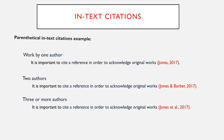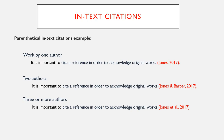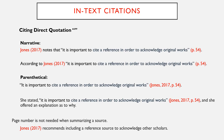For parenthetical in-text citations, the author is not mentioned in the sentence, so the author's last name and year are included in parentheses at the end of the sentence. When citing two or more authors, include an ampersand between the author's names. When citing three or more authors, include et al. in the parentheses. This is an example of a parenthetical citation. Note that the period always goes after the parentheses.